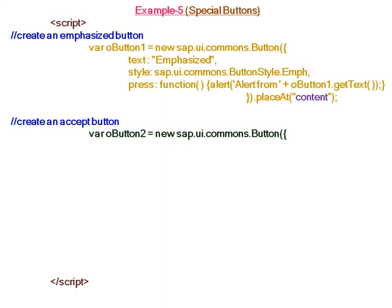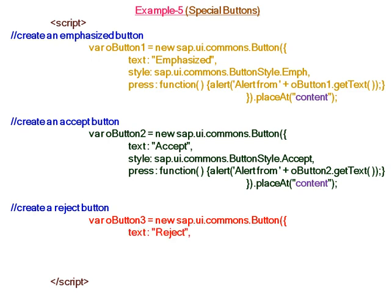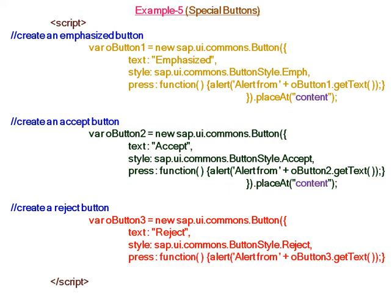We create Button 2 with text 'Accept' and style ButtonStyle.Accept. Again, the press event triggers a function where the user pressing the accept button gets an alert. We place Button 2 to the div element. Then Button 3 has text 'Reject' and style ButtonStyle.Reject, with a press event that also triggers an alert.